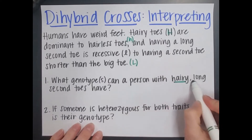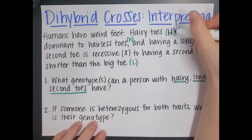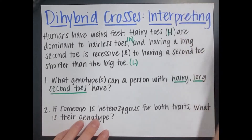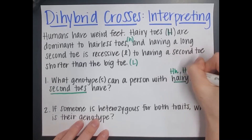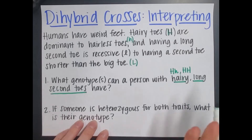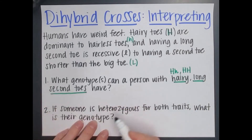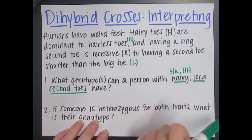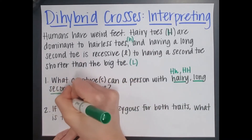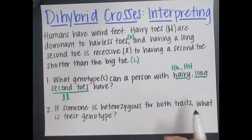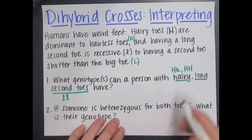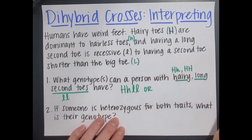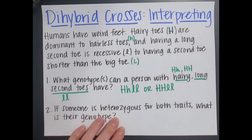Now I need to look for hairy and long second toes. A person with hairy toes is dominant, so they can have either one dominant allele or both dominant alleles: Hh or HH. For long second toes, those are recessive, so for them to show that phenotype they need both recessive alleles — ll only. Combining them: a person could be Hh ll or HH ll.